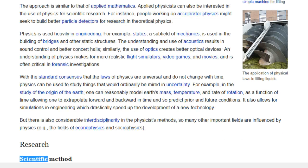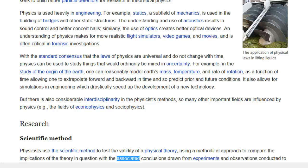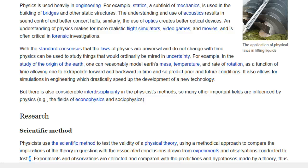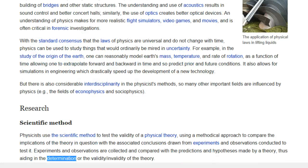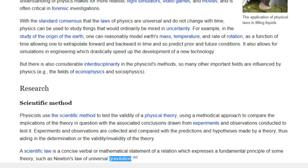Research. Scientific Method. Physicists use the scientific method to test the validity of a physical theory, using a methodical approach to compare the implications of the theory in question with the associated conclusions drawn from experiments and observations conducted to test it. Experiments and observations are collected and compared with the predictions and hypotheses made by a theory, thus aiding in the determination of the validity or invalidity of the theory. A scientific law is a concise verbal or mathematical statement of a relation which expresses a fundamental principle of some theory, such as Newton's law of universal gravitation.